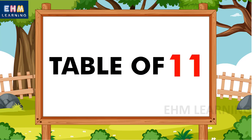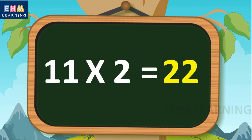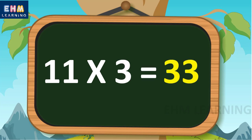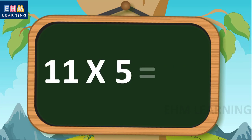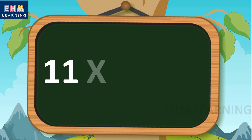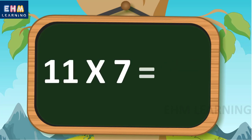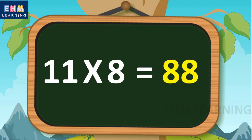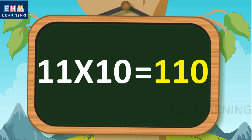Table of eleven. Eleven ones are eleven, eleven twos are twenty-two, eleven threes are thirty-three, eleven fours are forty-four, eleven fives are fifty-five, eleven sixes are sixty-six, eleven sevens are seventy-seven, eleven eights are eighty-eight, eleven nines are ninety-nine, eleven tens are one hundred and ten.